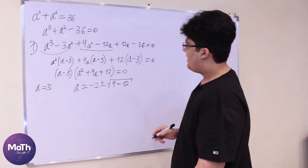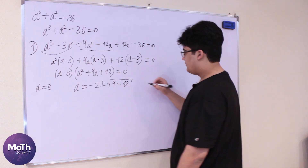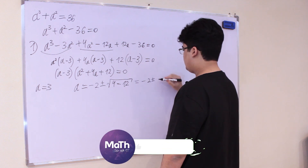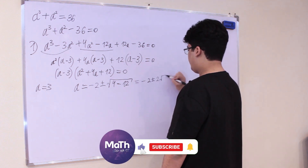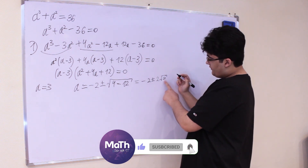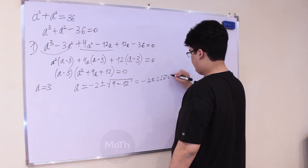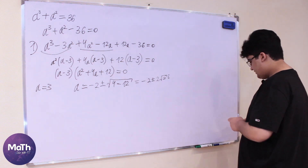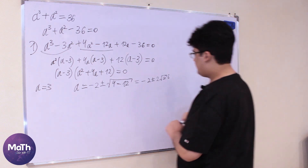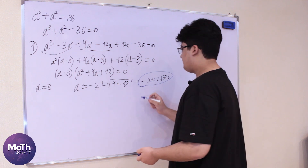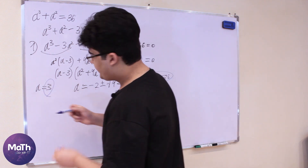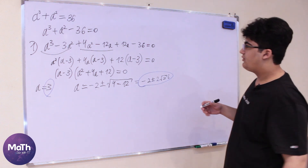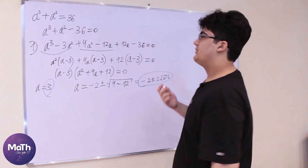We have -8 under the square root, so a = -2 ± 2i√2. Those are the solutions from the first approach. As I said, I have another approach to show you.